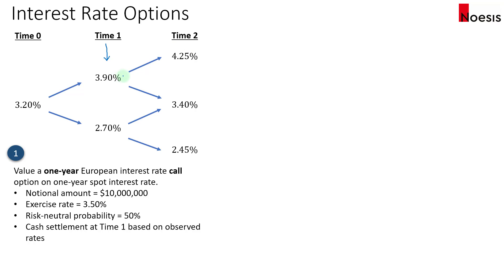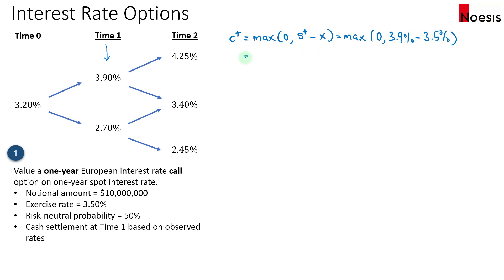At time one when the call option expires, we calculate the payoff at each node. At node C+, the payoff at the higher interest rate of 3.9% is the maximum of zero and 3.9% minus the exercise rate of 3.5%, which equals 0.4%. For C−, the payoff is the maximum of zero or 2.7% minus 3.5%, which equals zero, because the option is out of the money.